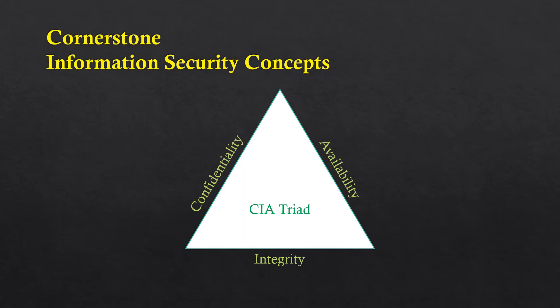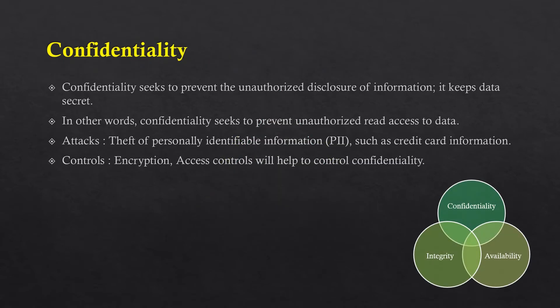All three concepts of the CIA triad work together to provide assurance that the data and systems remain secure. Therefore, do not think that one component is more important than the others. However, depending on the data or system to be secured, there will be a different prioritization among these three concepts.